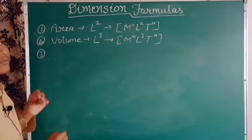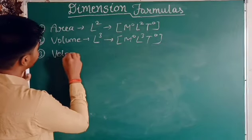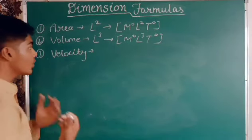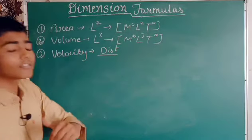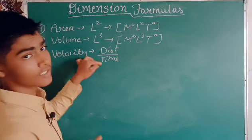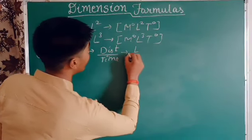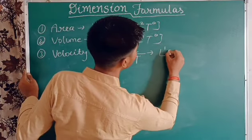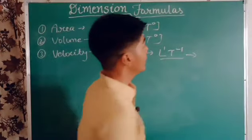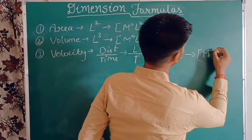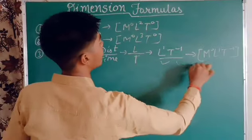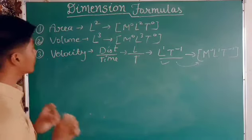The third example is velocity. Velocity is distance divided by time — distance means length, so it is L divided by T, giving us L¹T⁻¹. Putting it into the general formula, the dimensional formula for velocity is [M⁰L¹T⁻¹].